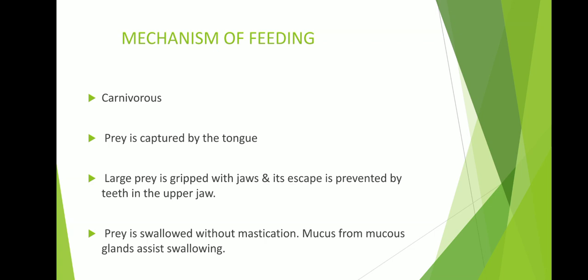Frog prey capture is interesting because the prey is captured with its tongue. The method of catching is peculiar. On finding the prey within reach, the frog opens the mouth and quickly strikes the prey with its tongue. The prey adheres to the tongue because the tongue is very sticky.